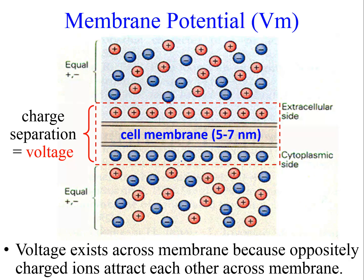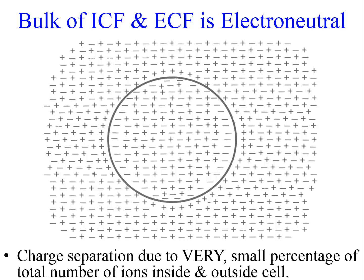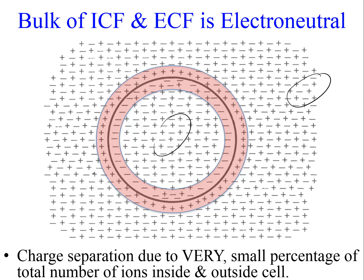This charge separation is only right at the membrane, where the oppositely charged ions are close enough to attract one another. It's also important to keep in mind that this charge separation represents only a very small percentage of the total number of ions inside and outside the cell. For a typical neuron, it represents only about 0.0005%, or 1 in 200,000, of the total ions. The bulk of the intracellular and extracellular fluid is electroneutral, with just a thin cloud of positive ions on the outside and negative ions on the inside surfaces of the membrane.